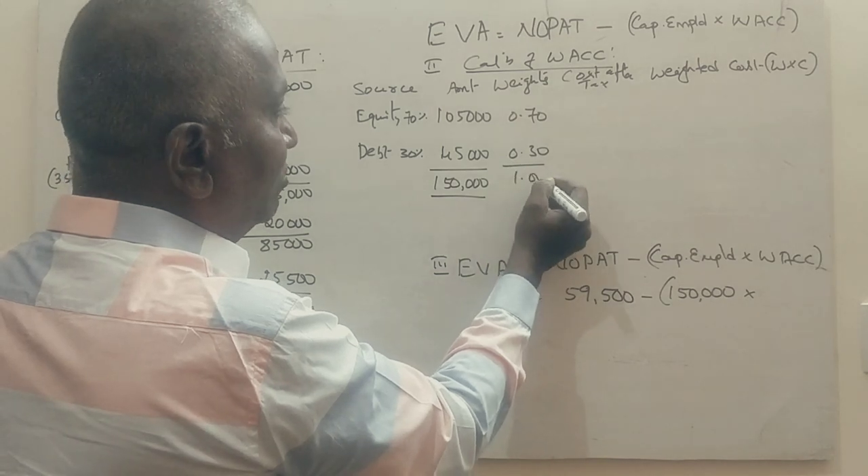Cost of equity is given directly as estimated cost of equity 15 percent. For debt, we need to adjust for tax. Pre tax cost of debt is given as 12%. So KD equals interest into 1 minus tax. Interest is 12%, tax is 30 percent. 12 into 0.70 equals 8.4 percent. So cost of debt after tax is 8.4 percent.